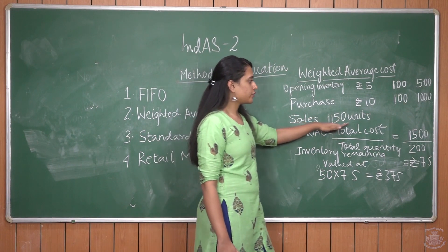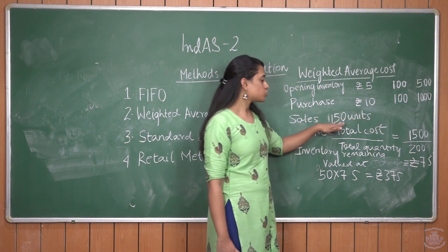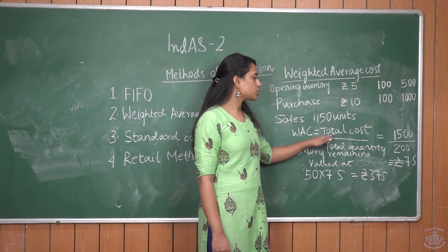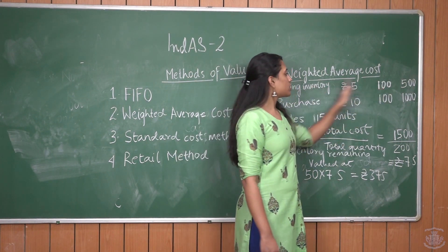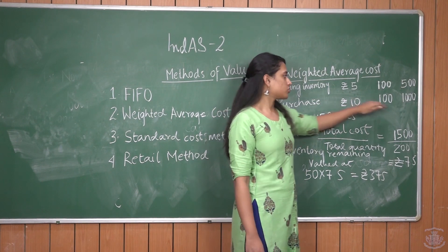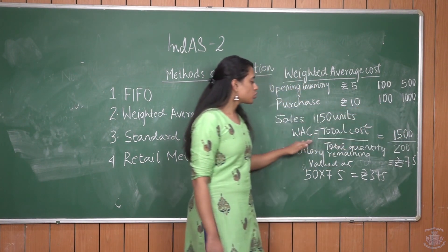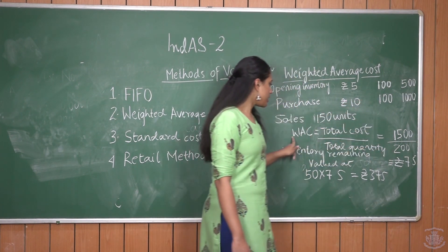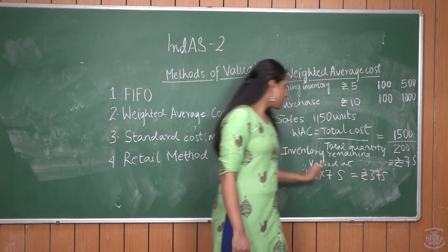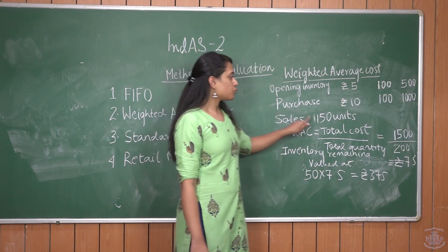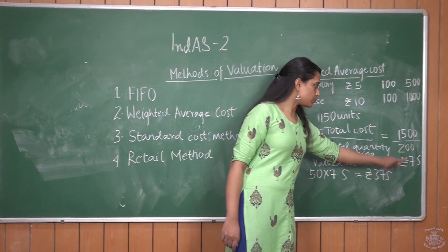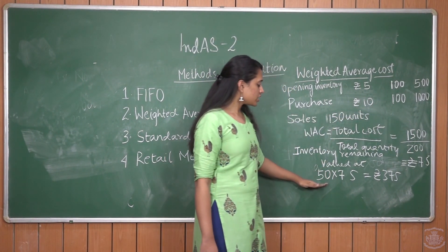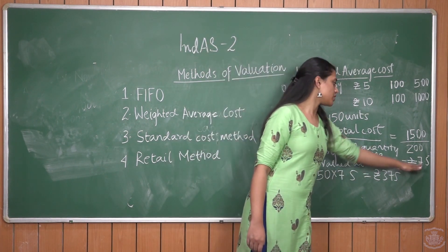Sales of 150 units are to be made. The weighted average cost per unit = Rs. 1,500 ÷ 200 = Rs. 7.5 per unit. So, sales of 150 units are measured at Rs. 7.5 each. The remaining inventory — 200 minus 150 = 50 units — is also measured at the weighted average cost of Rs. 7.5, giving a closing inventory value of Rs. 375.